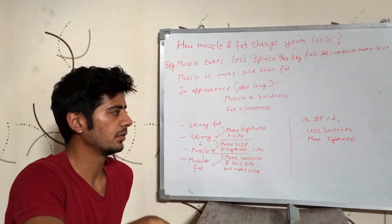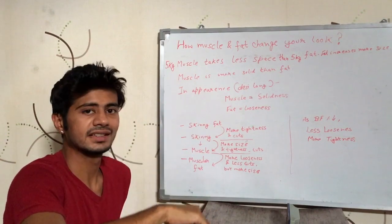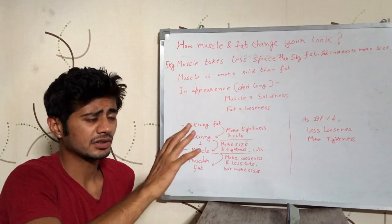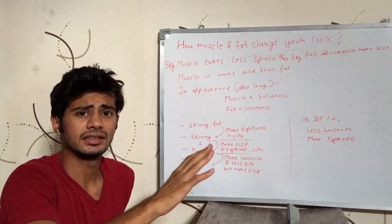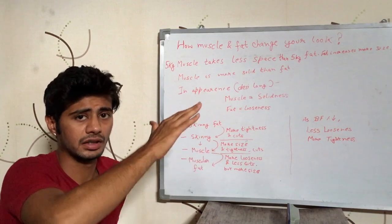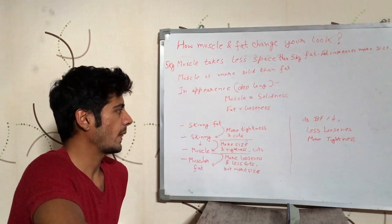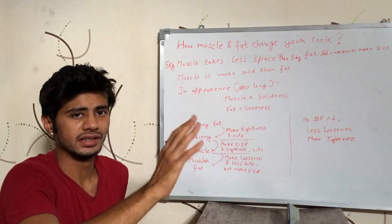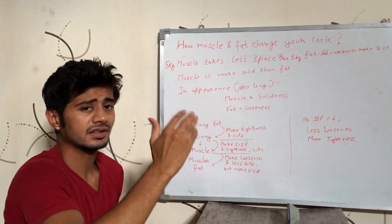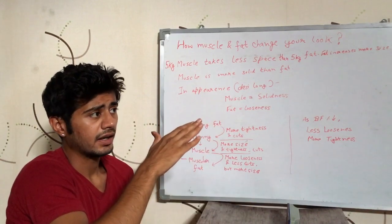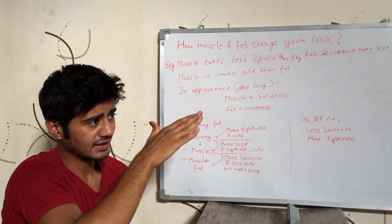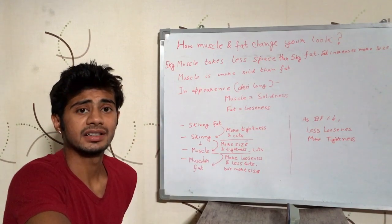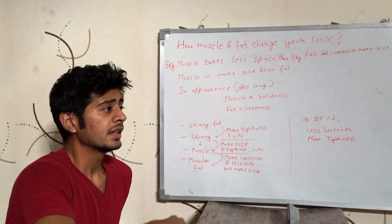Taking an example, consider an example of a person who is skinny fat, a skinny guy with a lot of fat, then that person would have really thin arms and legs but there would be a big belly. That person would look really loose in the appearance. Now let's say that person trims down the fat from his body and he has come to body fat percentage like 10% or something.